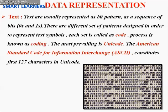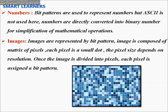Numbers are directly converted into binary for simplification. Images are also represented by bit patterns. Images are composed of a matrix of pixels, which are small dots. The size depends on the resolution — the image is divided into pixels and each pixel is assigned a bit pattern.